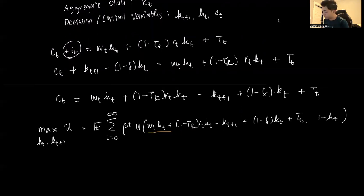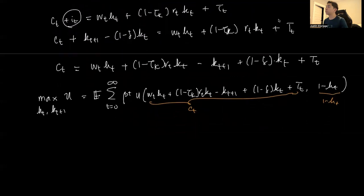So in here, this entire thing here is Ct, this is 1 minus Ht. That's the first and the second arguments.